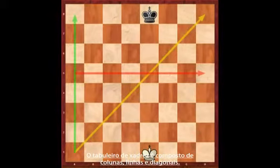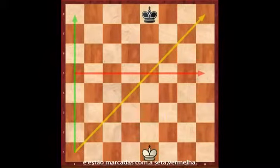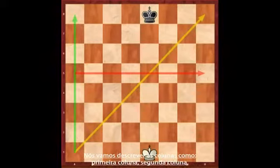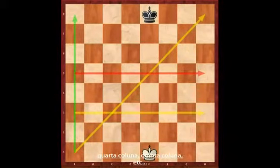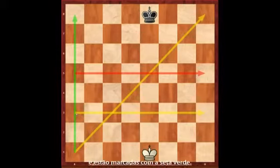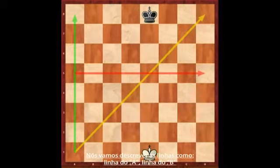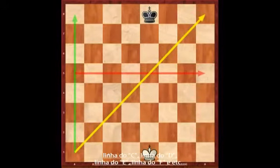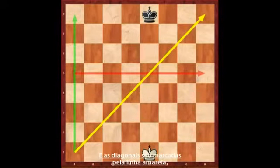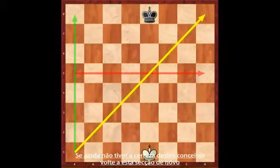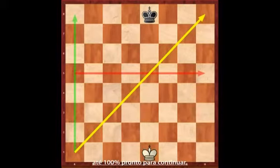Now the chess board is made up of ranks, files and diagonals. Ranks run horizontally and are marked with the red arrow. We would typically describe ranks as the first rank, the second rank, the third rank — I'm going to mark the third rank in yellow — the fourth rank, fifth rank, etc. Files run vertically and are marked by the green arrow. You would typically describe files as the A file, the B file, the C file, the D file, E file, F file, etc. And diagonals — well that's self-explanatory — they run diagonally and are marked by the yellow arrow. If you are at all unsure about this concept, run over this section again until you are 100% ready to go on.